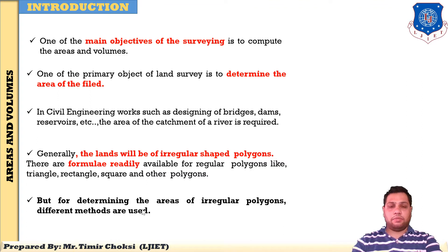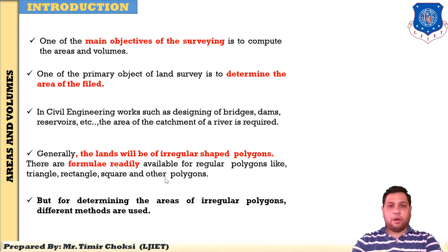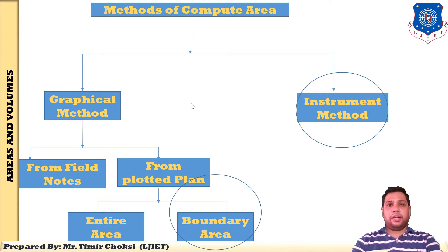But here the task is different — the field is different. Determining the area of an irregular polygon requires different methods. When the fields are of very irregular shape, different methods of area computation are used to find the irregular shape boundary area.